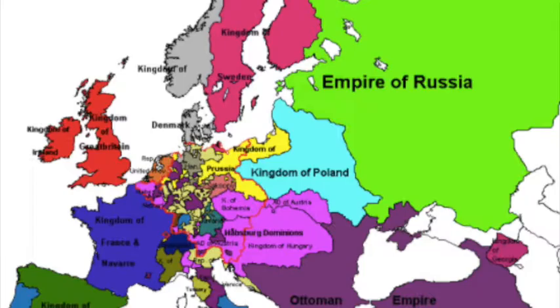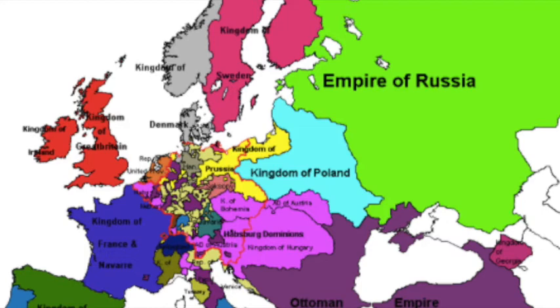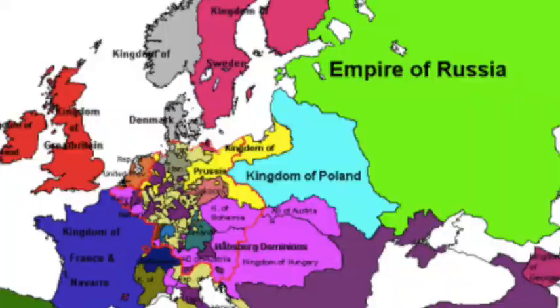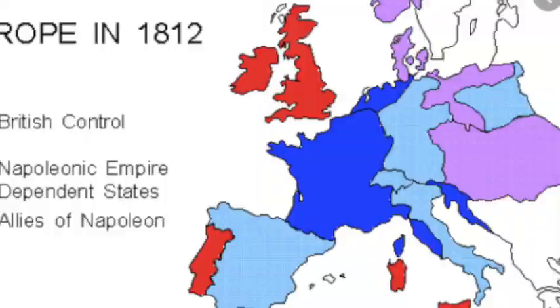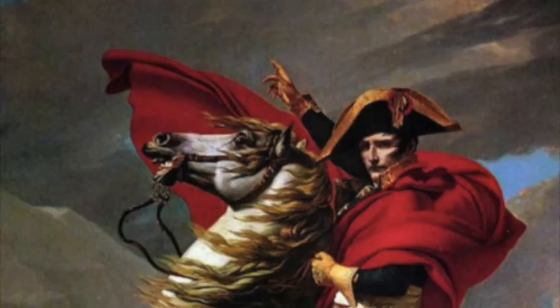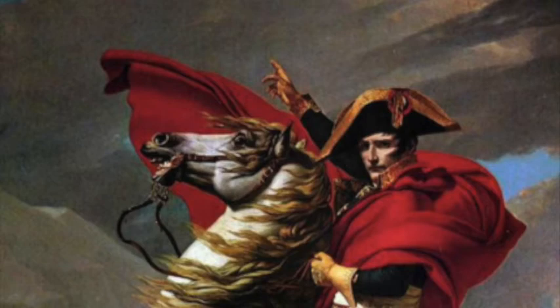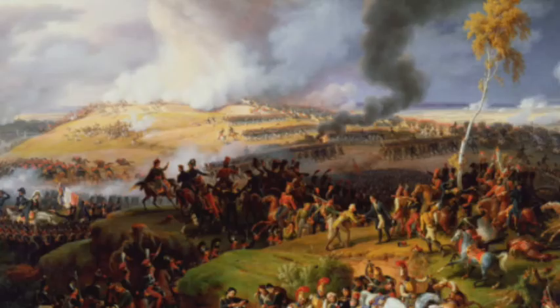The students will be given two maps — one of Europe in 1799 and one of Europe in 1812. They will be asked how the continent changed so much in just 13 short years to the point where France had nearly conquered all of Europe. The answer, of course, is Napoleon and his wars.